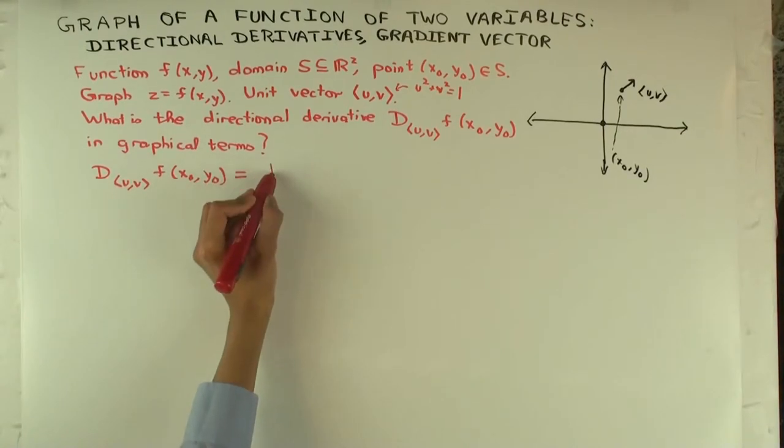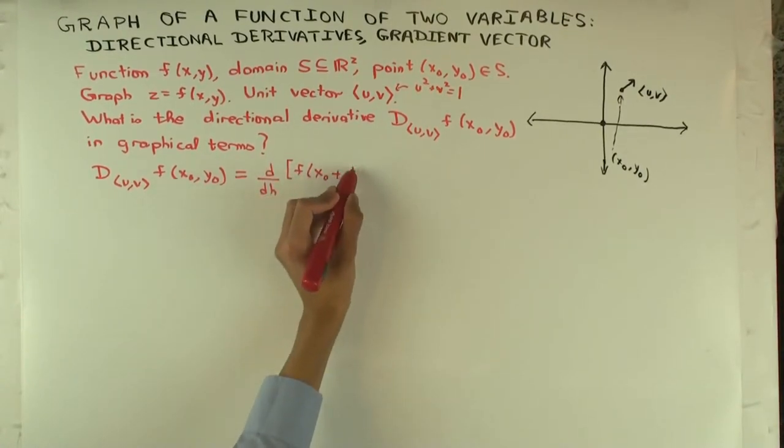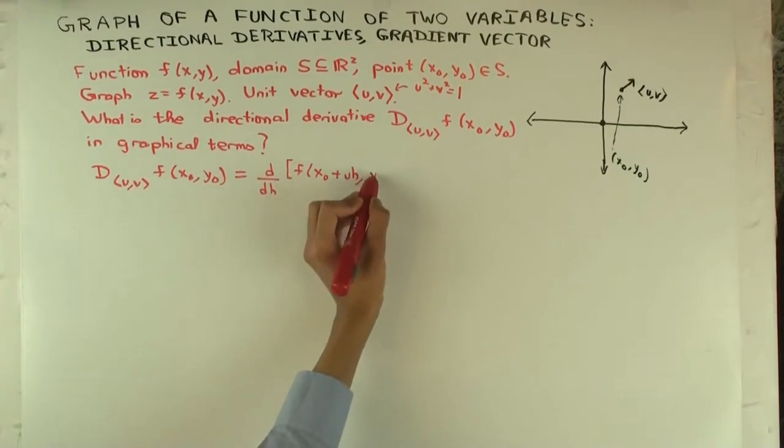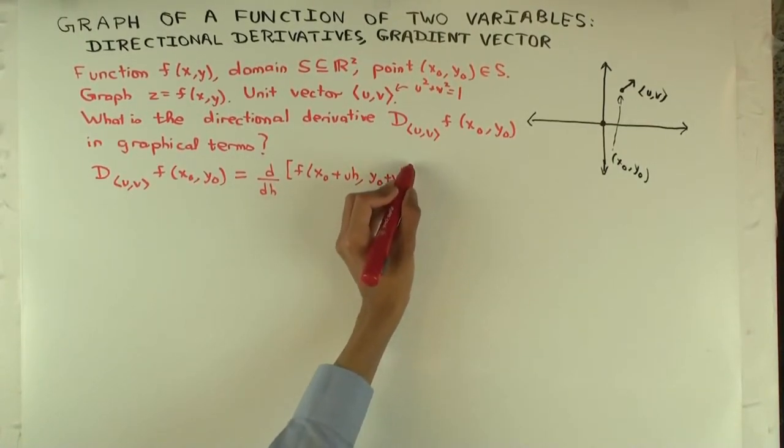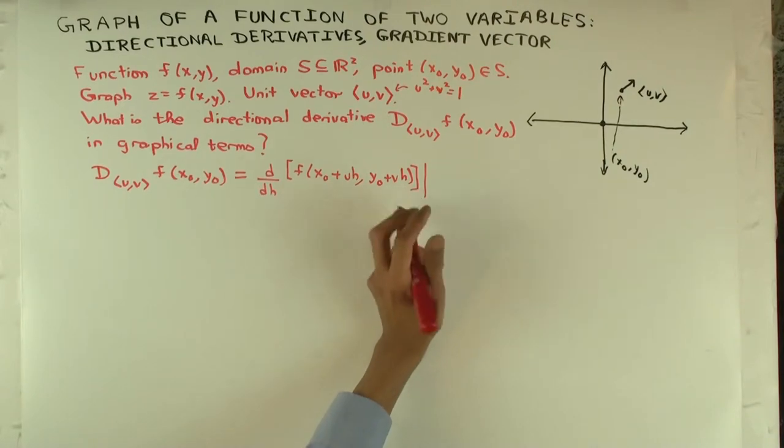And so you do d/dh of f(x₀ + uh, y₀ + vh) at what? What value of h? Zero. Zero. Right.